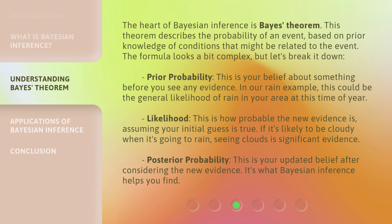Prior probability: this is your belief about something before you see any evidence. In our rain example, this could be the general likelihood of rain in your area at this time of year.